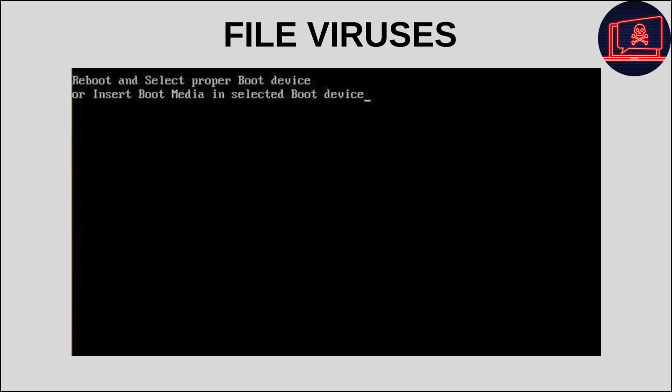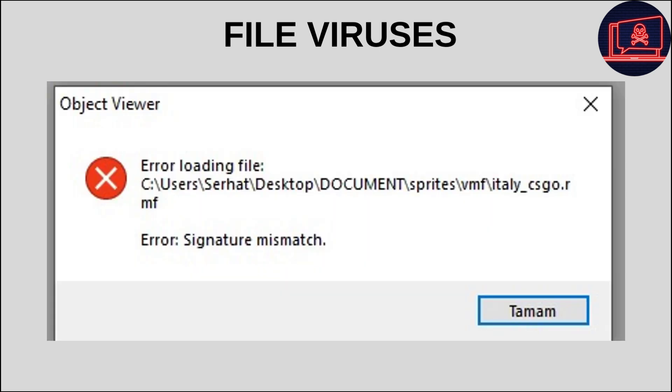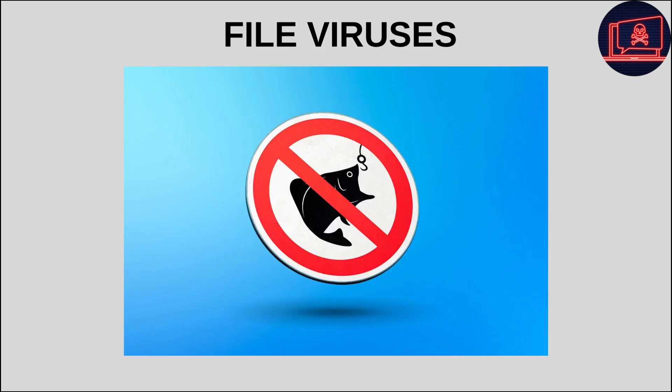In other words, when you open a program, the virus is activated and starts to perform malicious actions. File viruses usually change the size of the file or corrupt the structure of the file. These viruses can spread easily via email attachments, download links, or thumb drives.